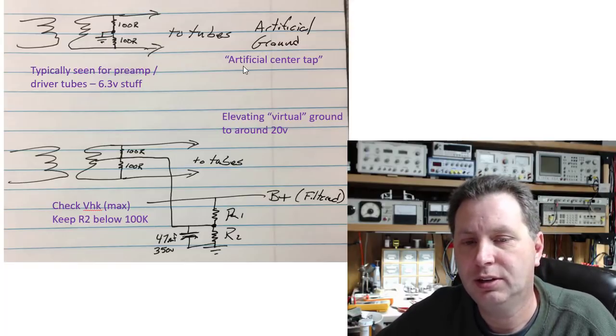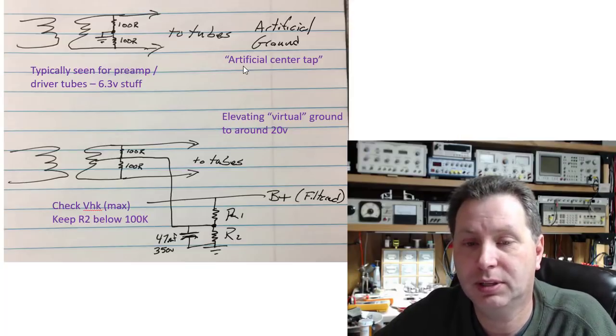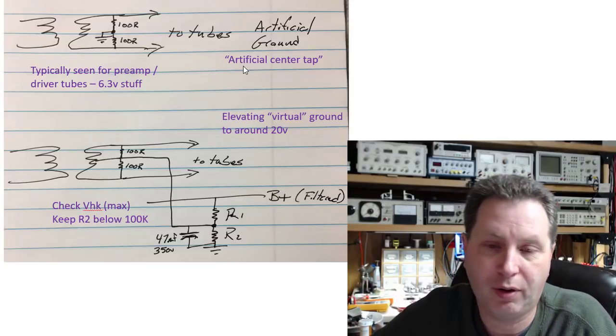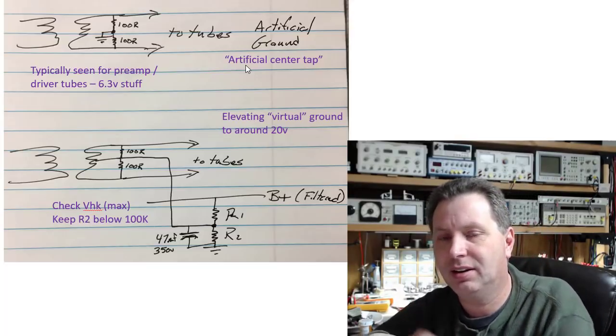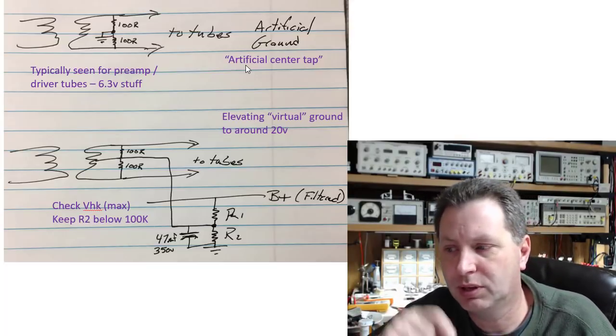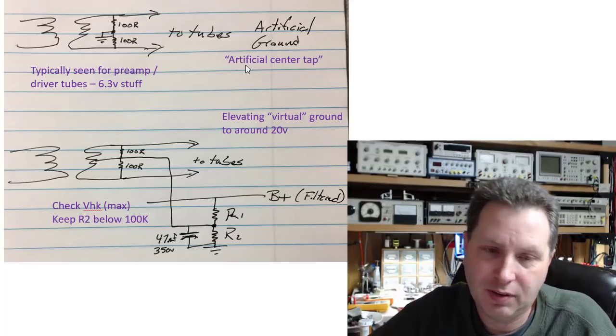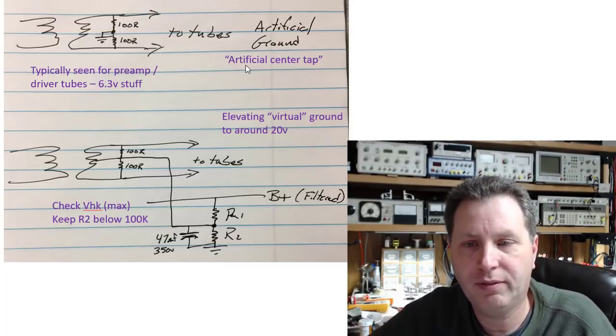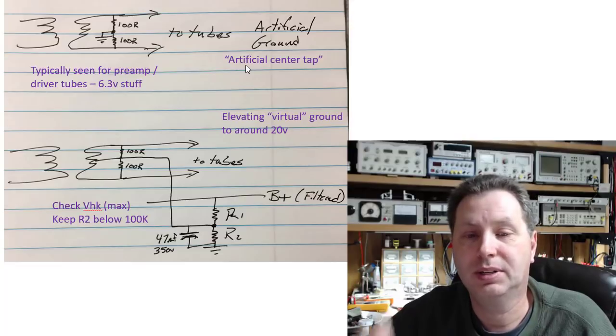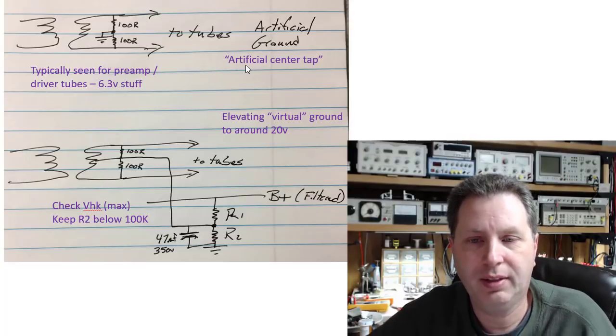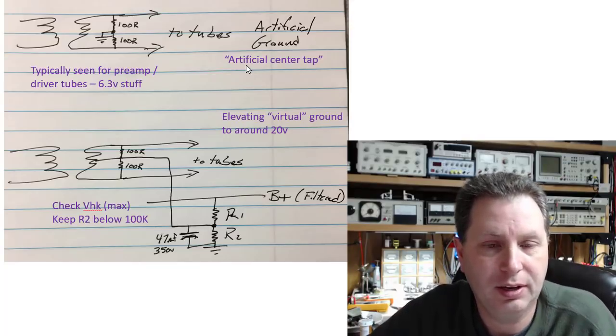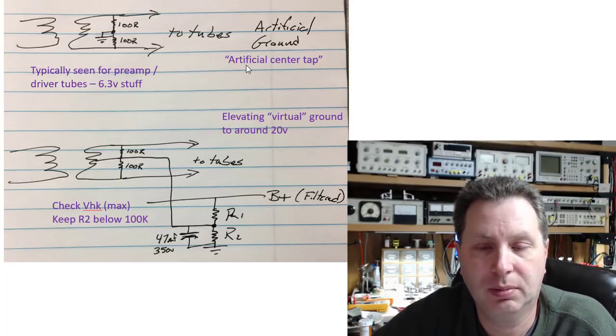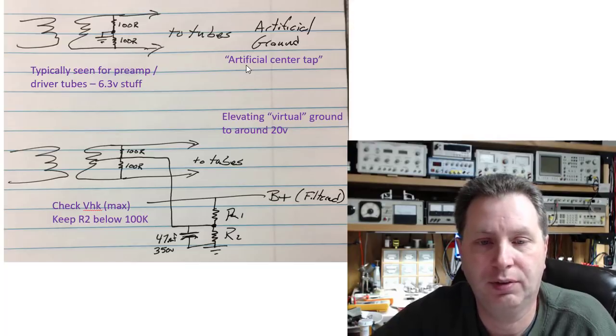So what you've actually done at that point is created what's called either an artificial ground or an artificial center tap between these two. And so instead of having 6.3 volts with respect to ground, what you've got is two 3.15-volt signals with respect to ground, and the polarity of those kind of cancel out. So it gets rid of some of the hum that you would feed to your tubes and ultimately get into the sound of your audio.